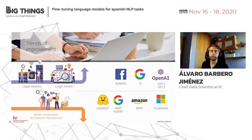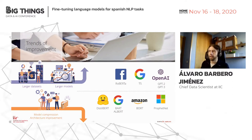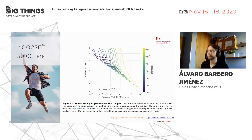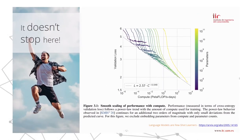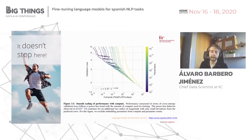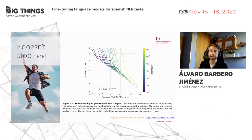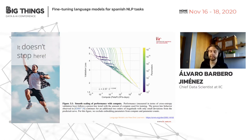Not only companies with very large clusters can use these models — we also have smaller versions for daily tasks. And this doesn't seem to stop: the GPT-3 paper shows that when you use a larger model and spend more time optimizing it, improvements in language learning tasks are quite noticeable. We haven't yet reached a point where increasing model size no longer provides additional benefits.